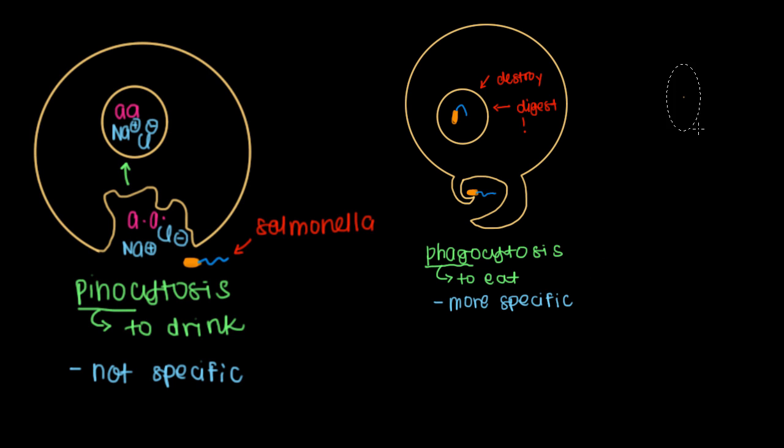So those are your three types of endocytosis. Let's shift now to exocytosis. How do big things leave the cell? Well, in this process, it all begins in an organelle inside of your cell that's known as the Golgi apparatus. And you can definitely notice this membrane around the Golgi apparatus, the same membrane that's around our cell.